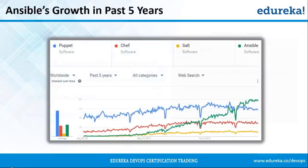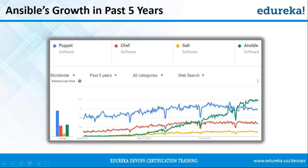Let's see the growth of Ansible over the past five years. This graph from Google Trends shows interest over time. The green line represents Ansible — even though it started slow, it has managed to earn its popularity. The blue line is Puppet, red is Chef, and yellow is Salt Stack. Ansible is definitely getting popular compared to all the popular tools in the market right now.